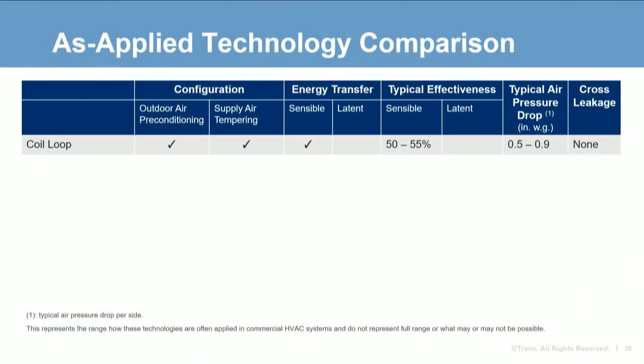Building a comparison table, coil loops are very versatile, allowing outdoor air preconditioning and supply air tempering configurations, and can be applied in networked arrangements. Coil loops only transfer sensible heat — no latent heat — with an effectiveness between 50 and 55%. Each coil has a typical air pressure drop between 0.5 and 0.9 inches of water. The separation of air paths also reduces the likelihood of cross contamination, so there is no cross leakage.